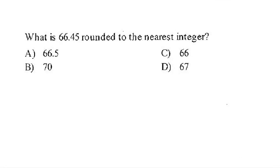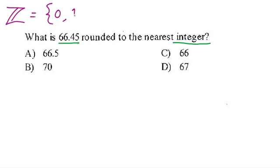With rounding questions and estimation, one trick they can throw in is the way they describe what you're rounding to. In this case, they say: what is 66.45 rounded to the nearest integer? An integer — here's our symbol for integers — is really just a whole number. Integers include 0, 1, and the negative whole numbers, so any positive or negative whole number is an integer.